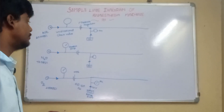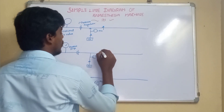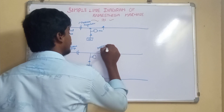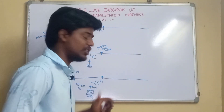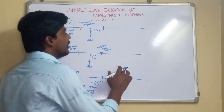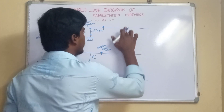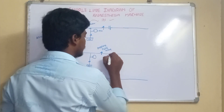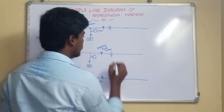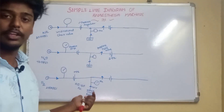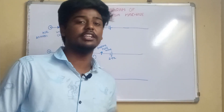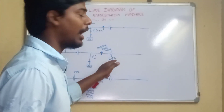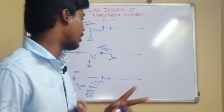After the pipeline supply, there is a pressure relief valve present in all three lines. The pressure relief valve protects the system from excess pressure. The pressure at this stage is 45 to 60 psi, but at the common gas outlet the pressure is only 4 to 6 psi. To fulfill that requirement, there is a secondary pressure regulator — also called the second-stage pressure regulator — which further reduces the pressure.